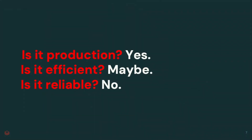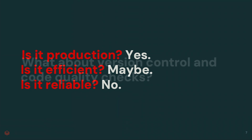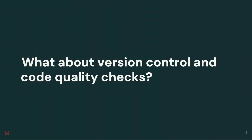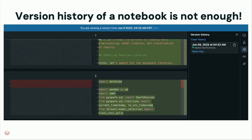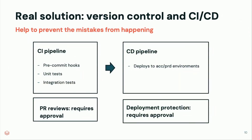Is it production? Yes. Is it efficient? Maybe. Is it reliable? No. What about version control and quality checks? Databricks has a version history feature for notebooks, but that's not enough — it doesn't really prevent mistakes from happening. You need CI pipelines with pre-commit hooks, unit tests, and integration tests.